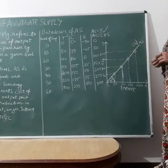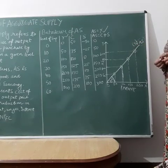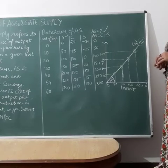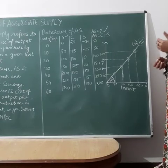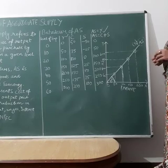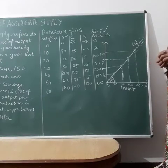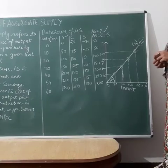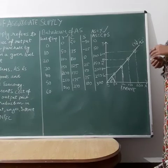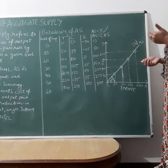In this video we are going to see the behavior of aggregate supply. To understand aggregate supply, we must know how to find it. Aggregate supply is equal to C plus S, the same way aggregate demand is equal to C plus I.